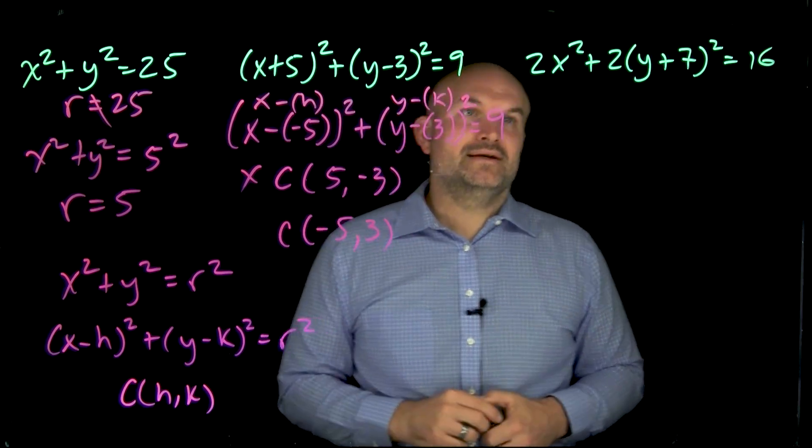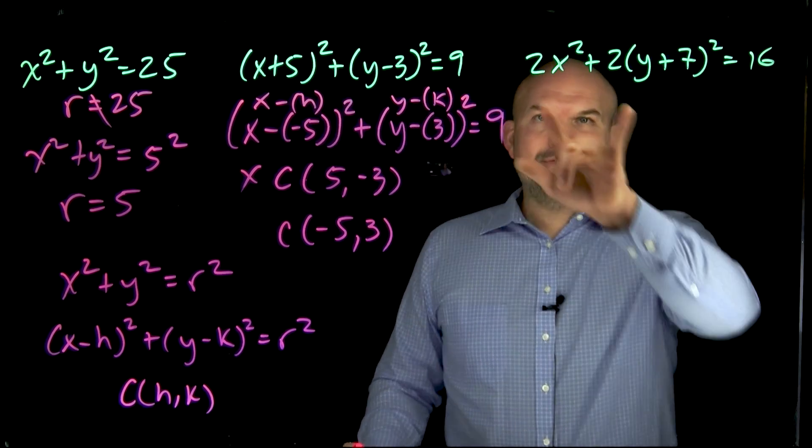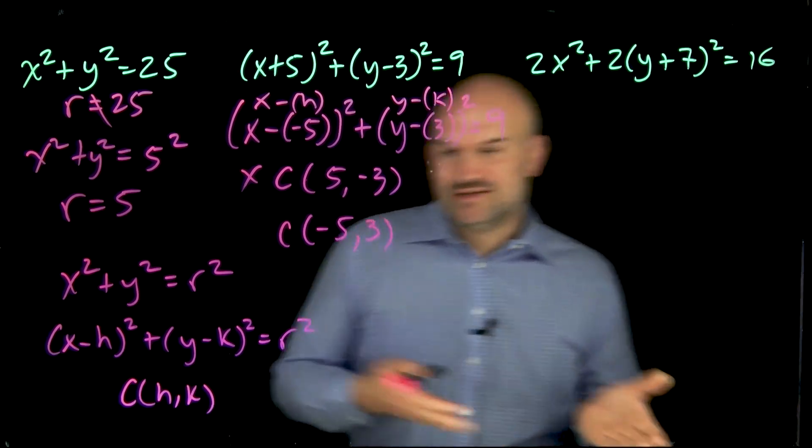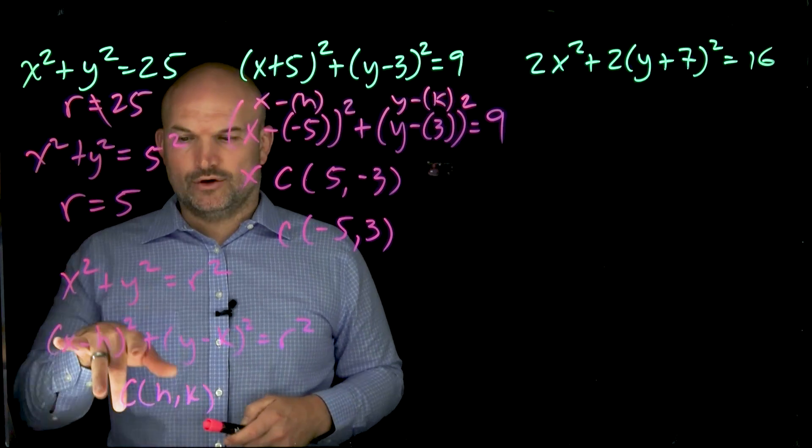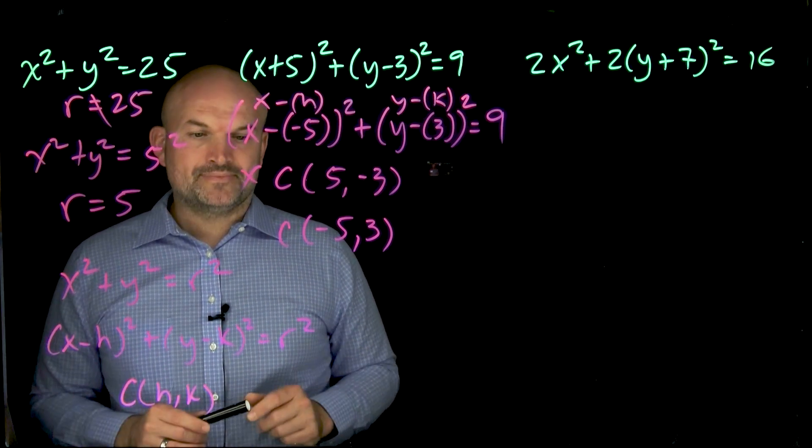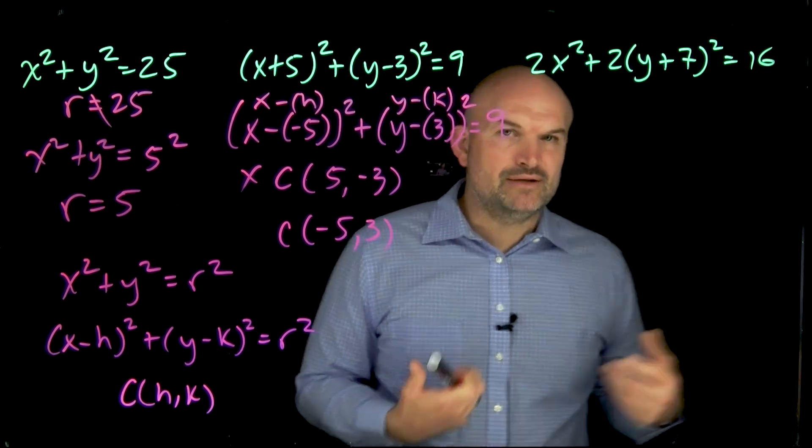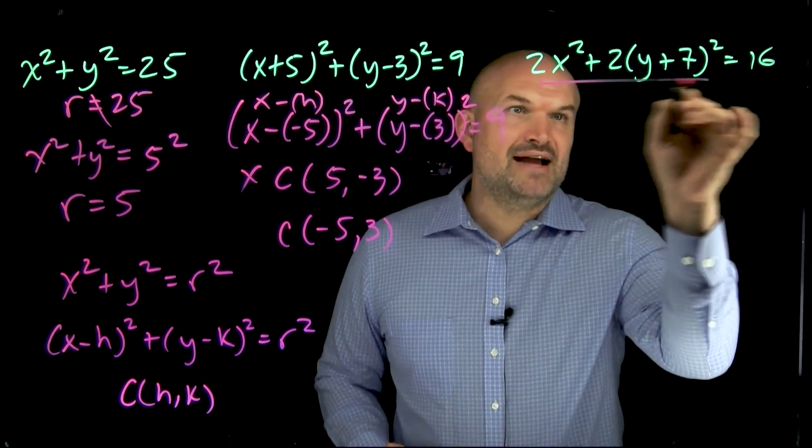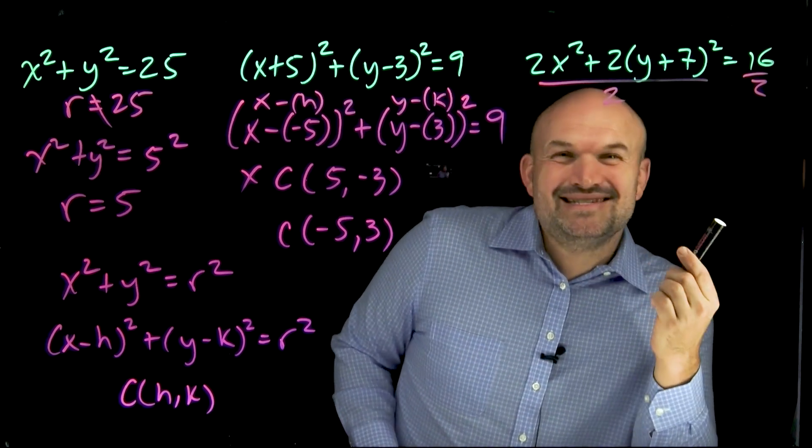And the reason why they make a mistake is they say, well, what do I do with these 2s in here? Now, notice, go back to the formula I provided you. The formula over here did not have any coefficients of your x and your y squared, or the quantity x minus h squared and y minus k squared. Like, they didn't have those. So what do we do with these 2s? Well, we got to get rid of them. So how do we get rid of the 2s? Well, divide by 2 on both sides.